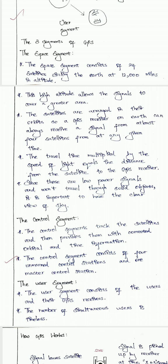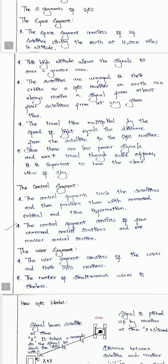Satellites are arranged in a way such that a GPS receiver on Earth can always receive a signal from at least 4 satellites at any given time. Travel time multiplied by the speed of light equals the distance from the satellite to the GPS receiver. Since satellite signals are low power signals, they won't travel through solid objects, so it is important to have a clear view of the sky.